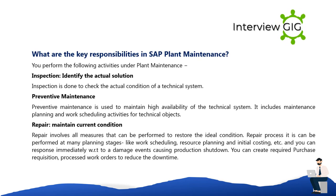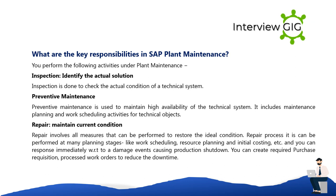What are the key responsibilities in SAP Plant Maintenance? You perform the following activities under plant maintenance: Inspection — identify the actual condition; inspection is done to check the actual condition of a technical system. Preventive Maintenance — used to maintain high availability of the technical system; it includes maintenance planning and work scheduling activities for technical objects.